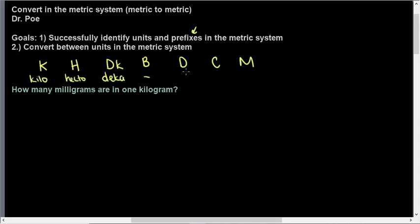There's no prefix. D is deci, C is centi, and M is milli. Okay, so these are the prefixes of the metric system.